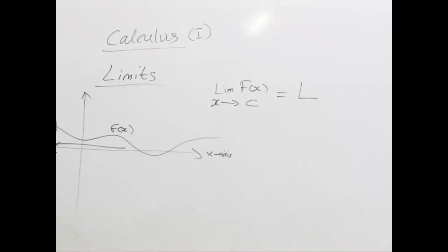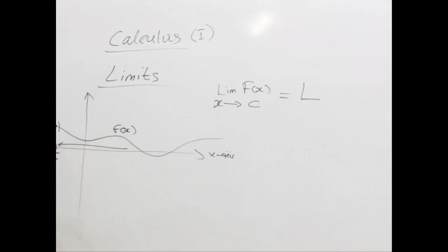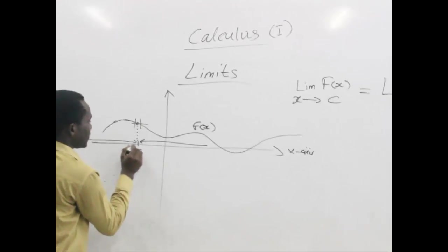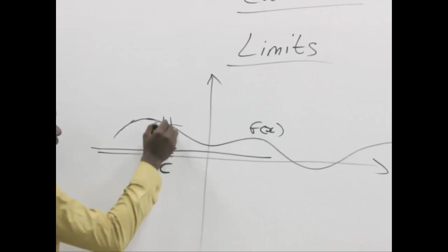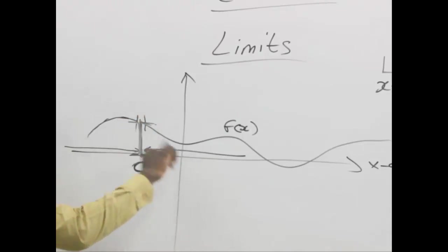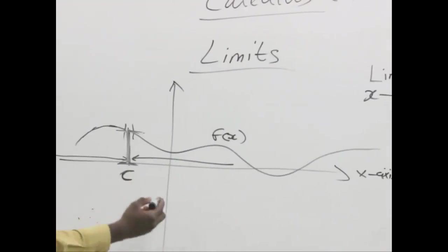We can also explain this graphically using the same graph. We can see that when we are approaching c, the graph is either increasing or decreasing. Limits actually tell us the height of the graph as the values are approaching c, or any number we replace c with. As the graph approaches c, what is the height of that graph? That height is what we refer to as L — it is the behavior of the graph as we approach c.